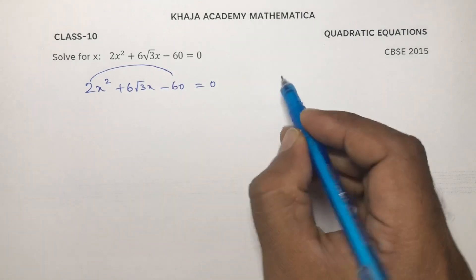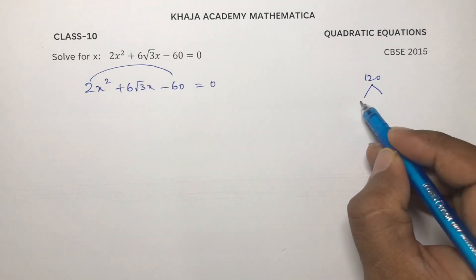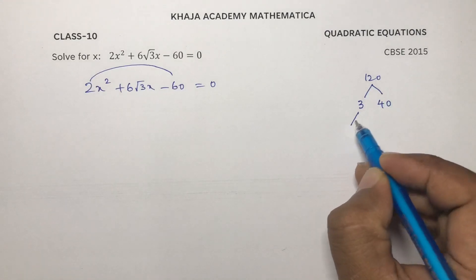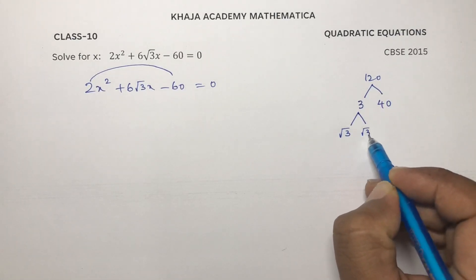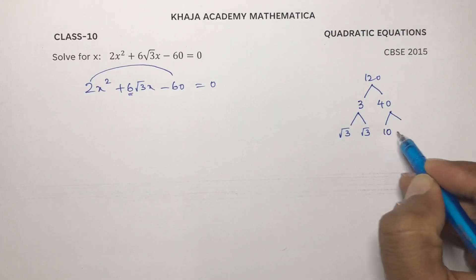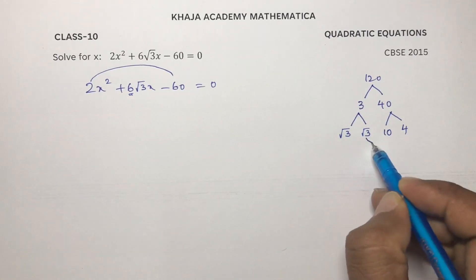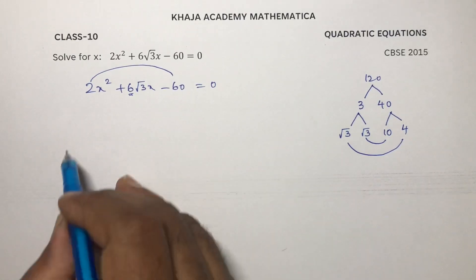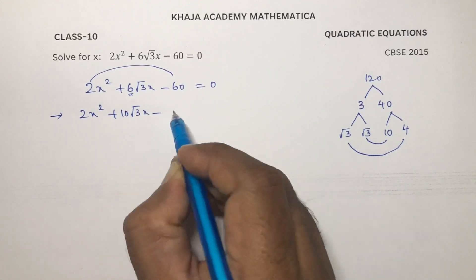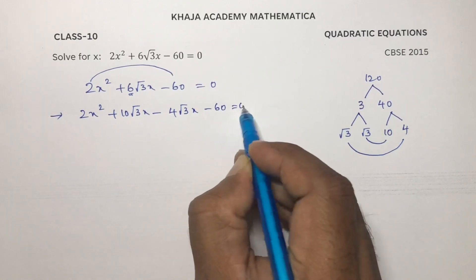So 2 into 60 is 120. We need root 3, so write 3 into 40. For this 3, change it as root 3 into root 3. And with the help of 40, we need to get 6, so write 10 into 4 because 10 minus 4 is 6. So now 10 root 3 and 4 root 3. So: 2x squared plus 10 root 3 x minus 4 root 3 x minus 60 equals 0.